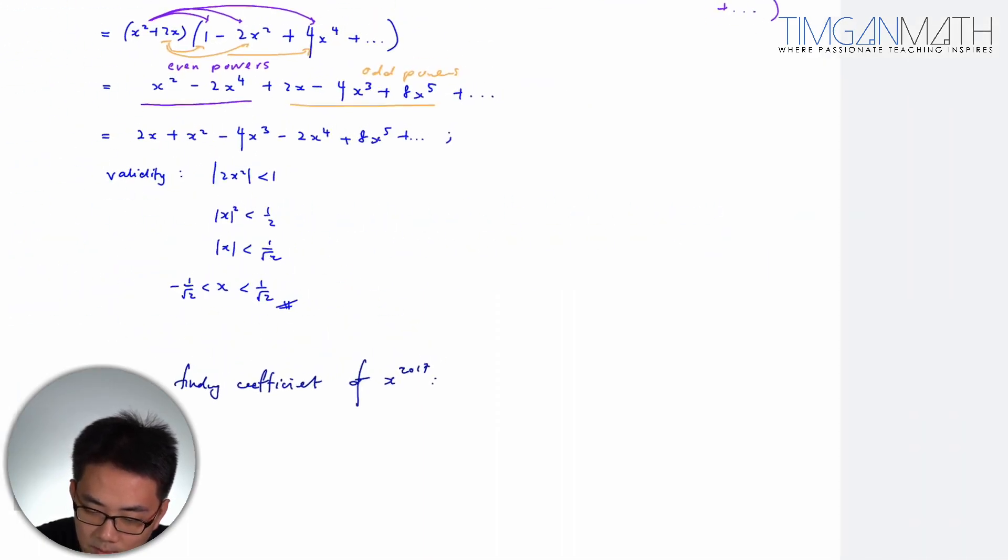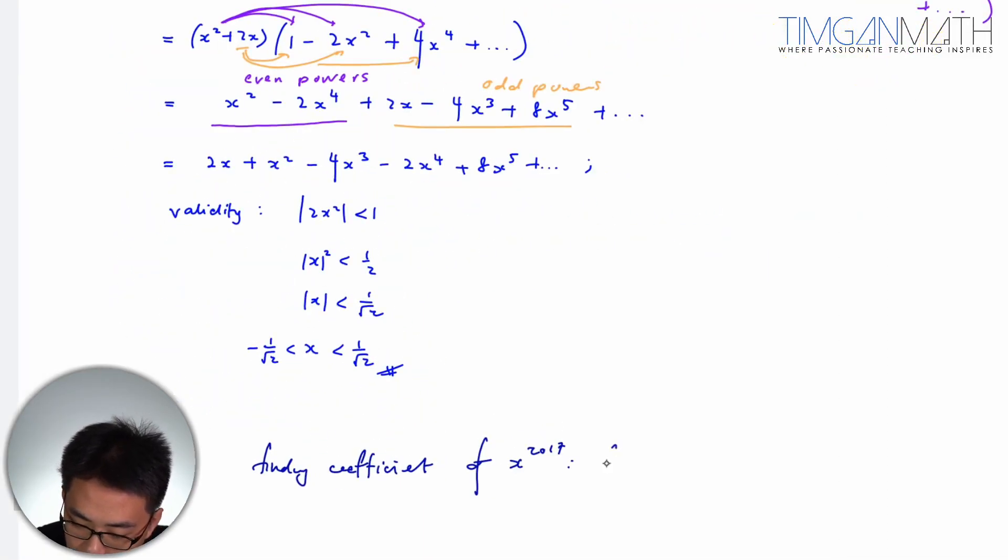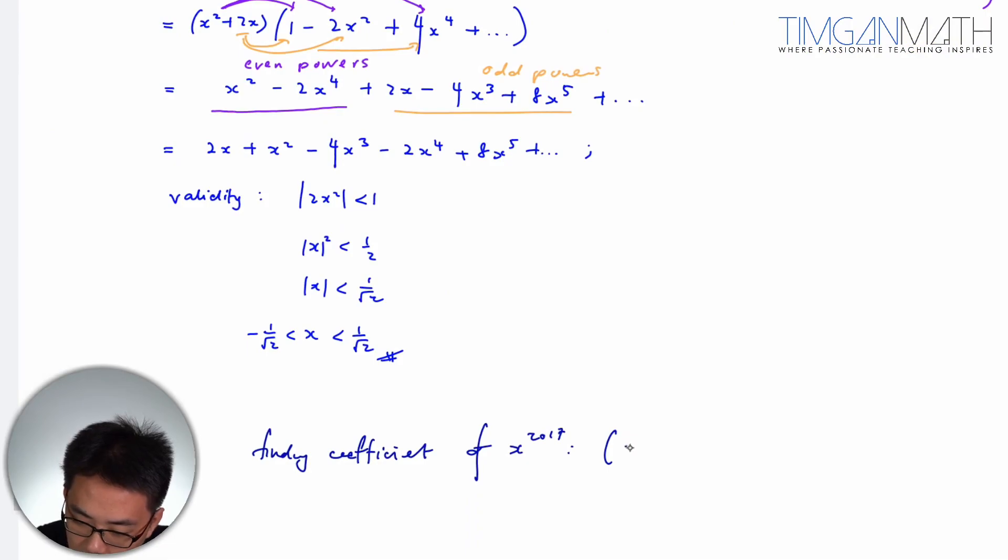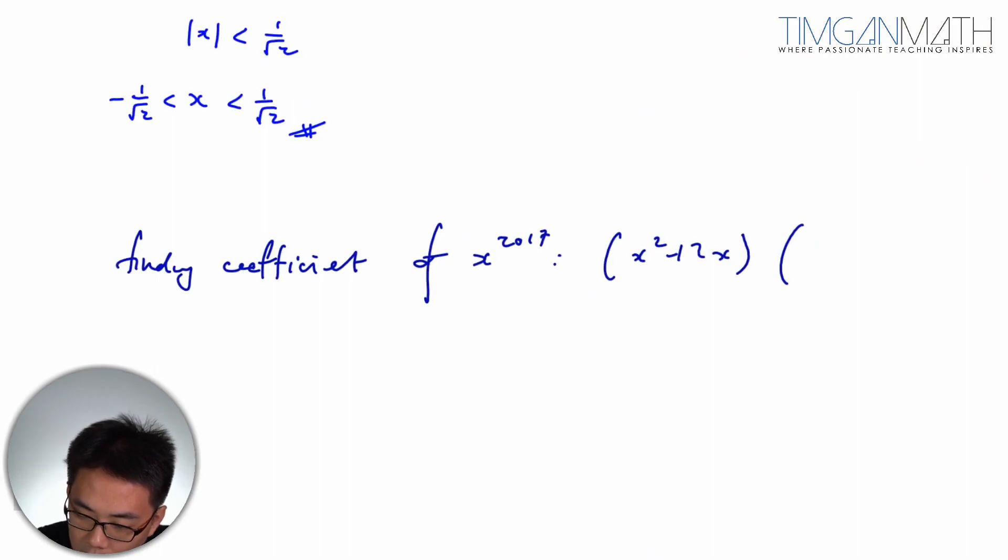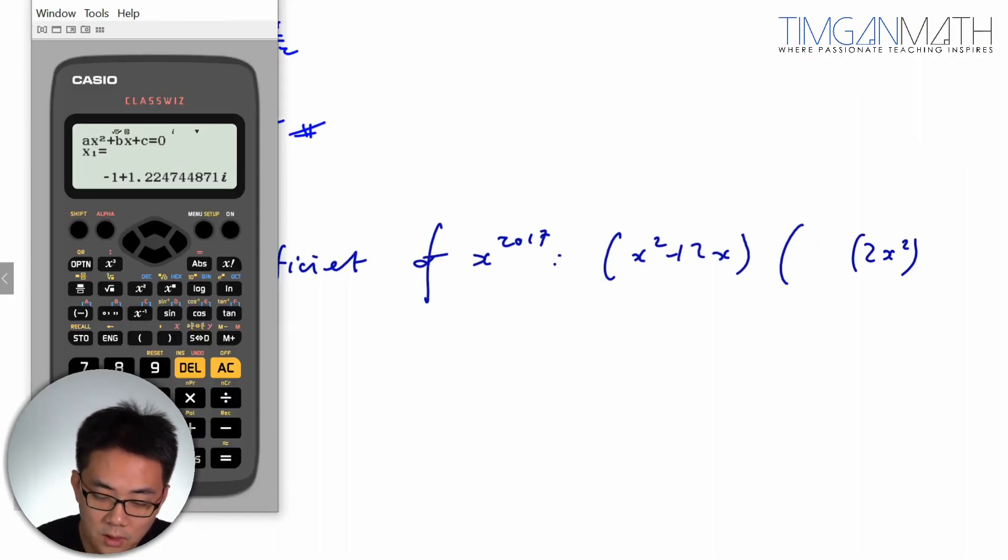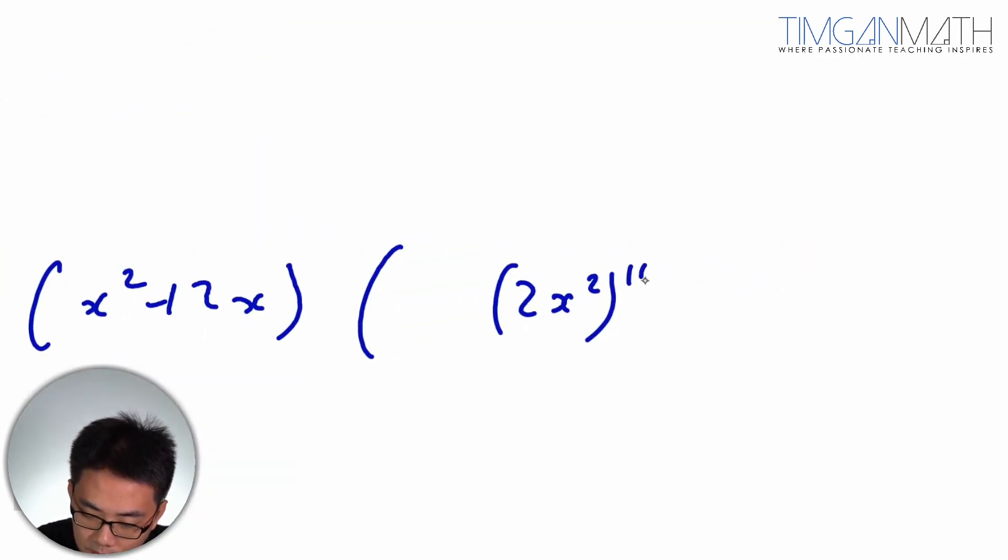What you need is actually (x^2 + 2x), you need 2x^2, you need this power to be 2016, so 2016 divided by 2 would be 1008.